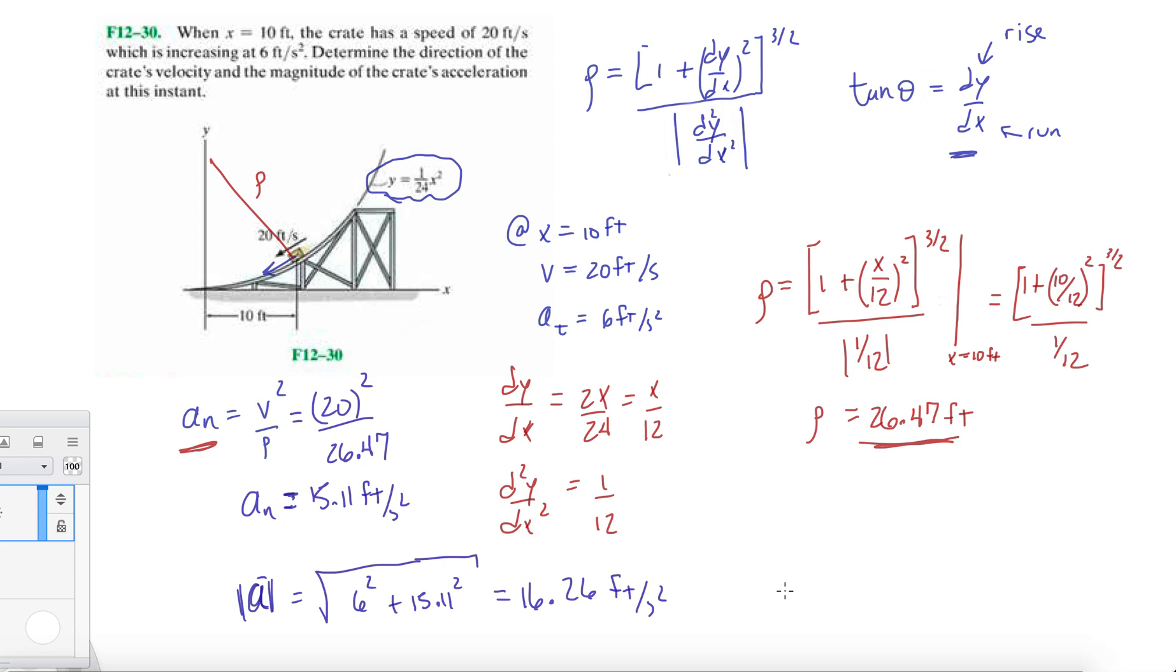Now for the direction of the velocity, we know it's going to be this angle right here. Theta equals inverse tan of dy/dx, which is x over 12, but at x equals 10 feet, so 10 over 12. When we do that, we get 39.8 degrees.